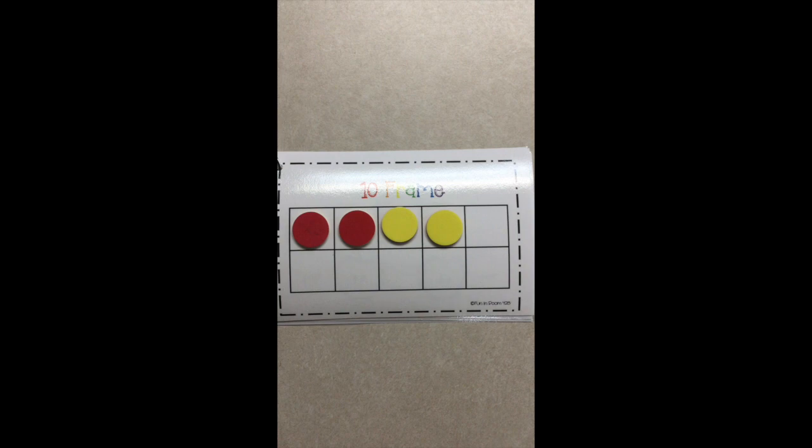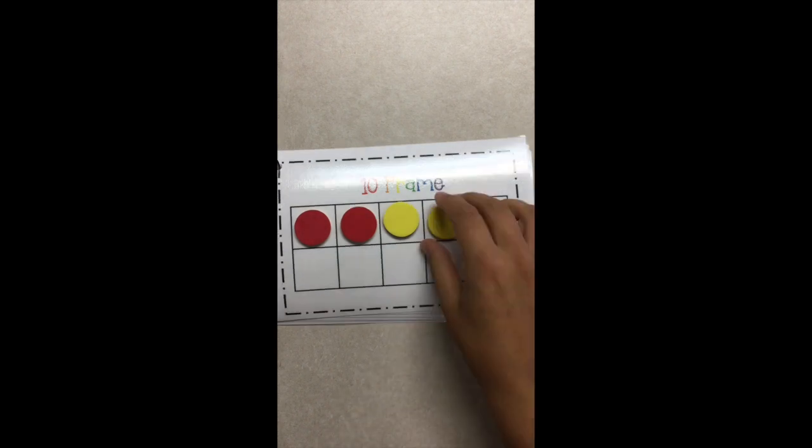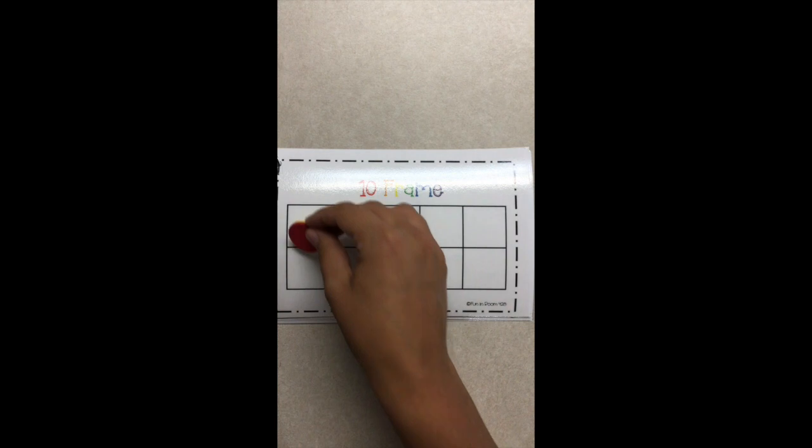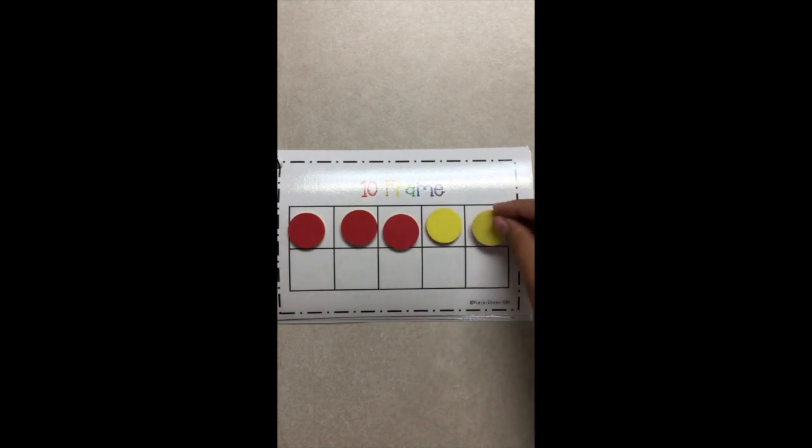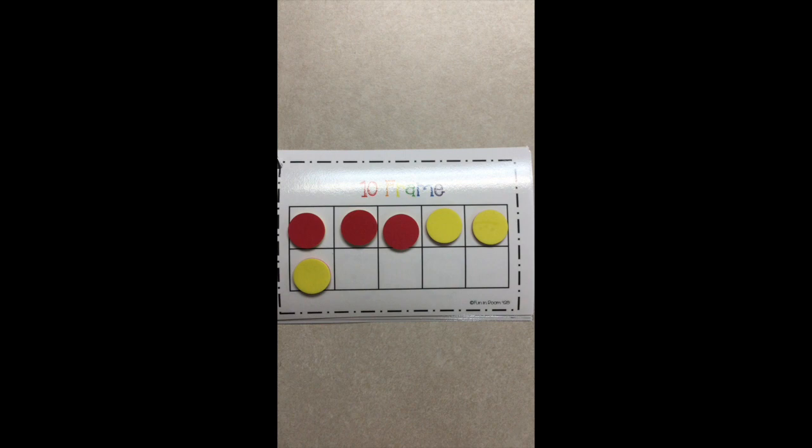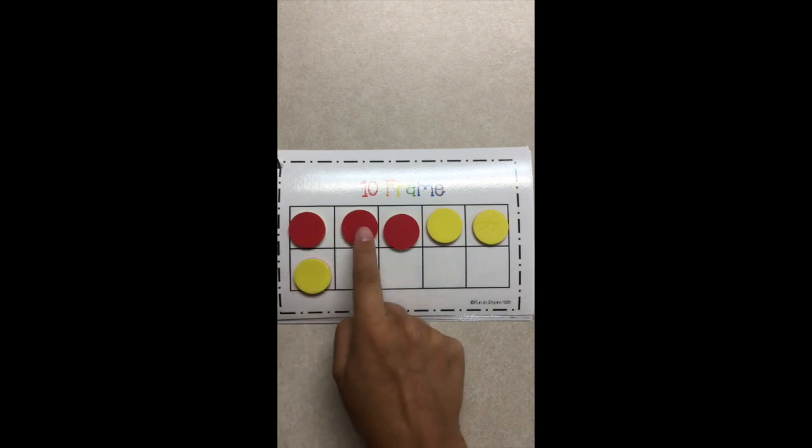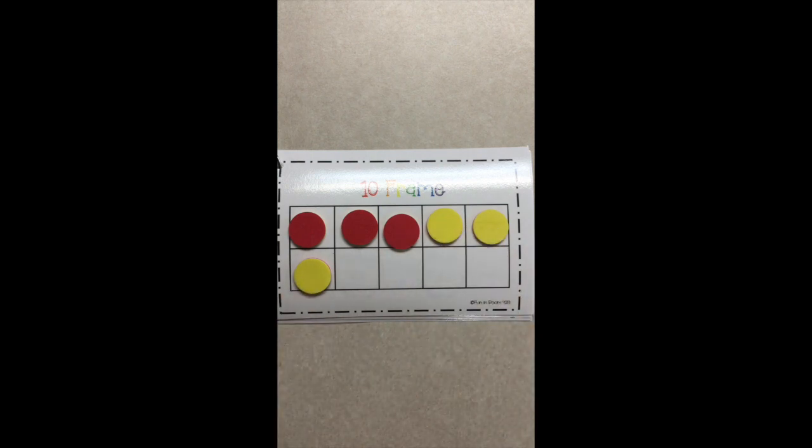I'm going to call out another one and I'm going to give you a moment to see if you can solve it. Ready? Make sure you're using two different colors. This time do three plus three. Hopefully you're getting out two different colors to help you solve. Three plus three. Let's do it together and see if you got it. I'm going to start with reds one two three. Now I need to double it with yellows one two three. How many do I have all together? One two three four five six. Did you get the right answer? Give yourself a pat on the back if you did.